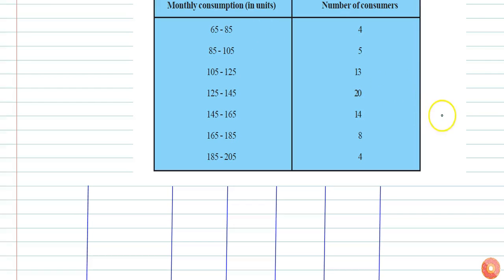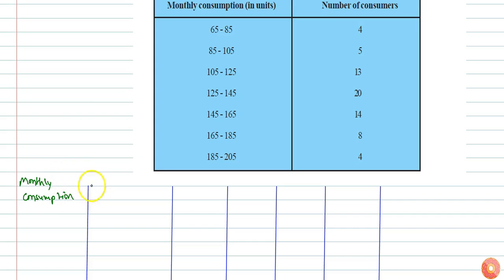In this question, first we shall calculate the mean of the given data. I am using the first column as monthly consumption in interval form, and the second column for number of consumers for that particular interval.